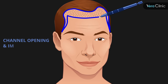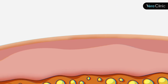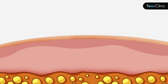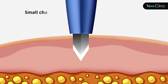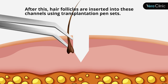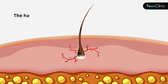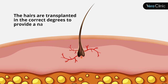Channel Opening and Implantation: Small channels are opened on the transplantation site after applying local anesthesia. After this, hair follicles are inserted into these channels using transplantation forceps. The hairs are transplanted at the correct angles to provide a natural appearance.